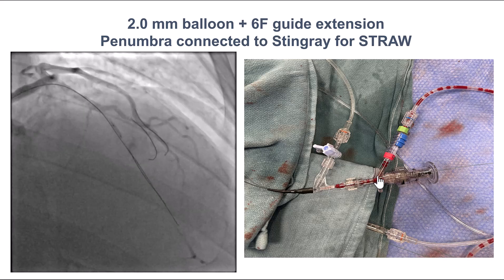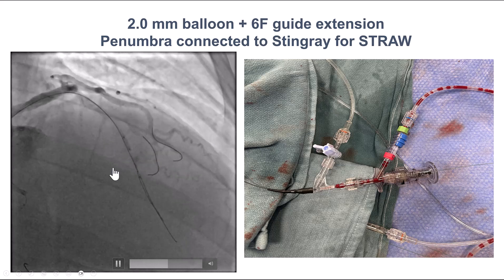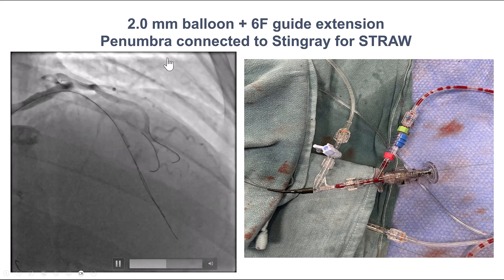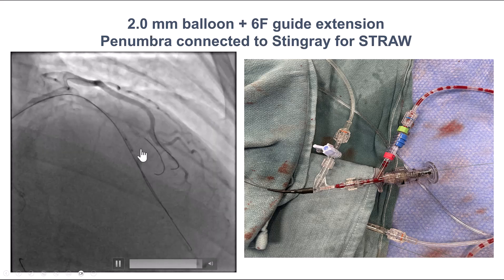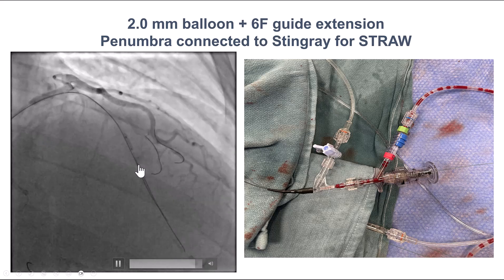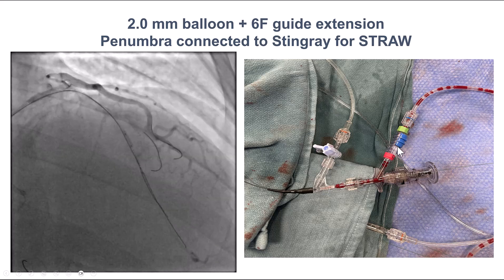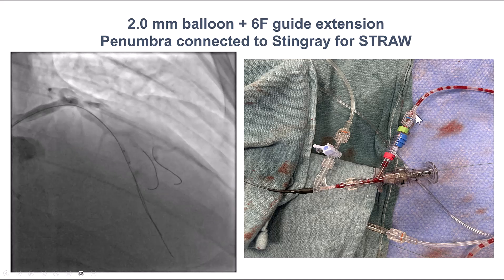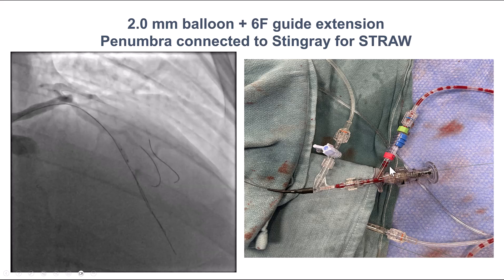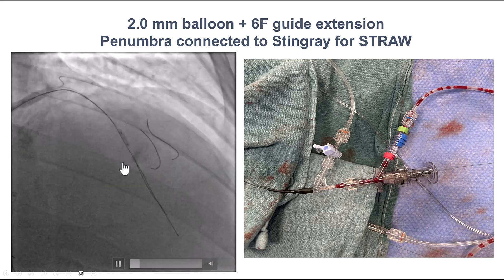That left us with the option of either doing an investment procedure — knuckling to get some flow — but we really don't like to do investment procedures such as the STAR technique in the LAD because of the multiple septal and diagonal branches. Instead, we decided to decompress the hematoma using the so-called straw technique: advancing a microcatheter into the extraplaque space and aspirating. We performed a more extreme form of this by advancing a Stingray balloon and placing a Penumbra pump on the side port of the Stingray balloon, using an extra two-way to aspirate through the Stingray balloon and decompress the hematoma.